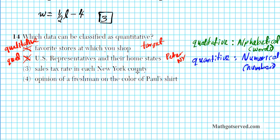Sales tax rates in each New York county. What's the sales tax rate in each New York county? So the sales tax is about 4.5%. Or in numerical form you can write it as .045. What is this? Is this a number or a word? It's a number, which tells you that this is quantitative. And this is what we're looking for.